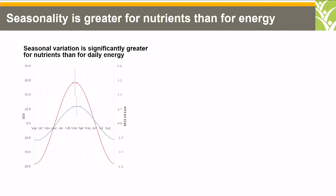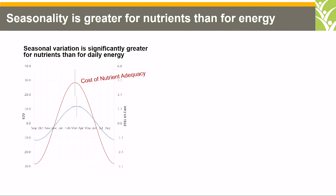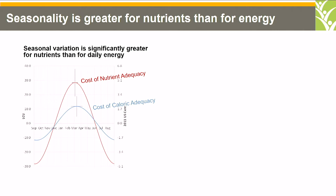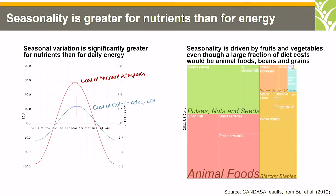Basically, the seasonality variation is significantly greater for nutrients than for daily energy. This graph considers the combination of all food groups. You will notice the cost of nutrient adequacy and the cost of caloric adequacy in the study. This diagram shows that seasonality is driven mostly by fruit and vegetables, although a large fraction of dietary cost also comes from animal food and beans. Now the next speaker will talk about wages and how they affect dietary outcomes. Thank you.